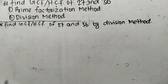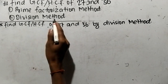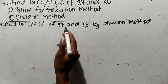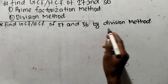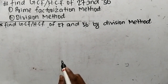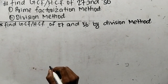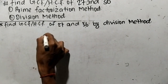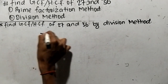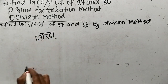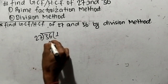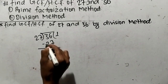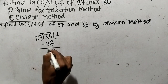Our second method is by division method. So let's find out GCF or HCF of 27 and 36 by division method. While finding out GCF or HCF by division method, we have to divide the greater number, which is 36, by the lesser number, which is 27. So 27 times 1 equals 27, and 36 minus 27 equals 9.